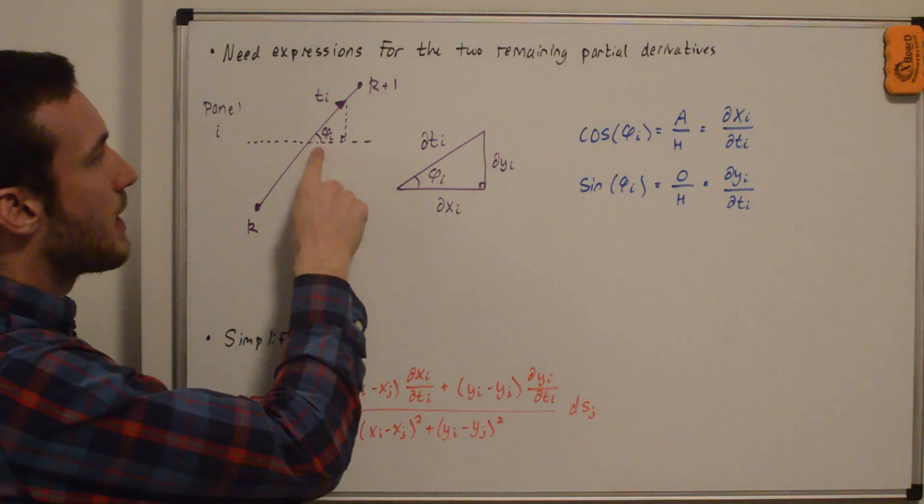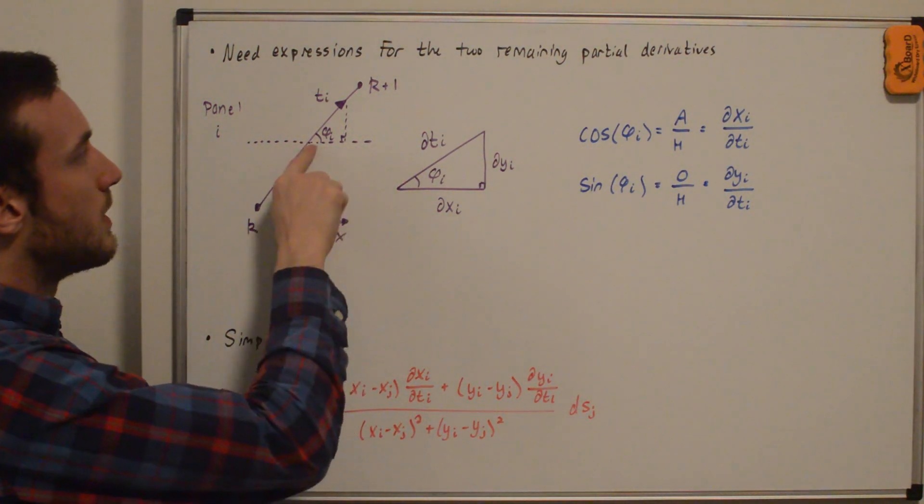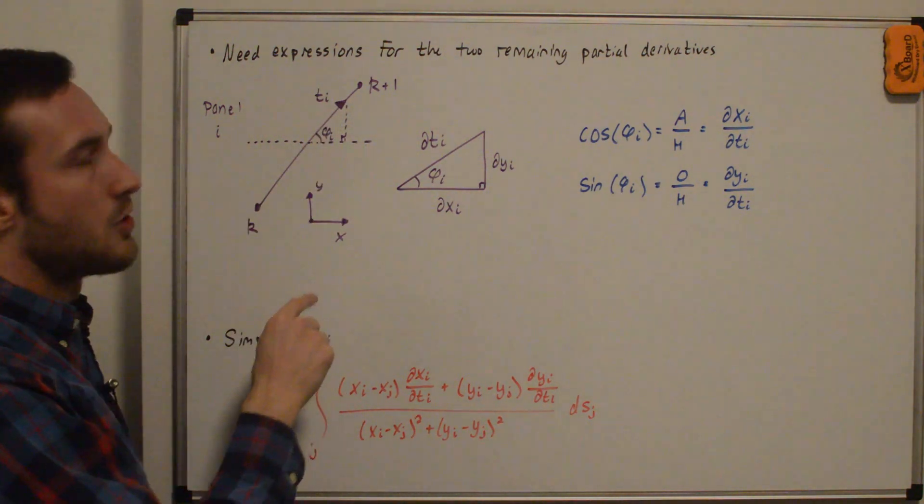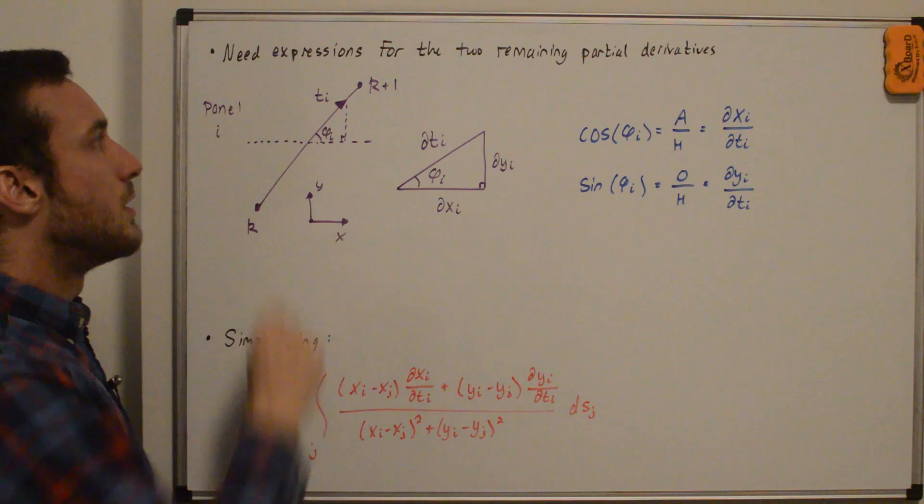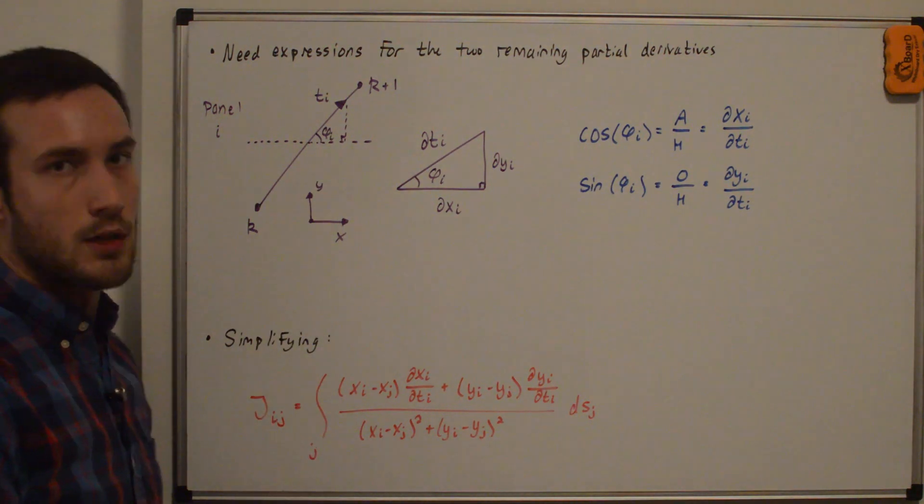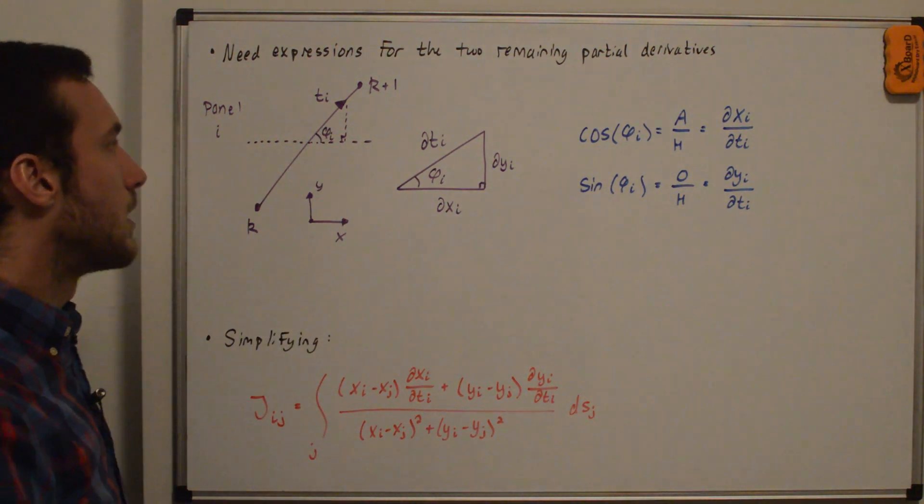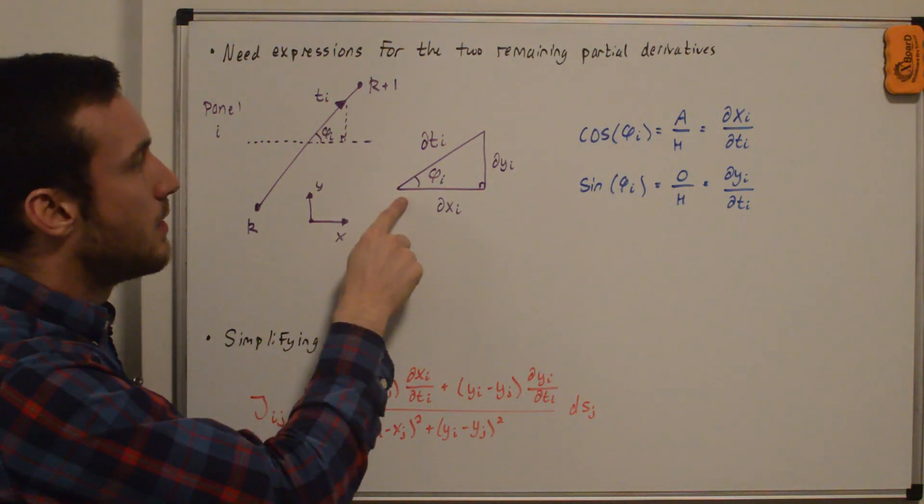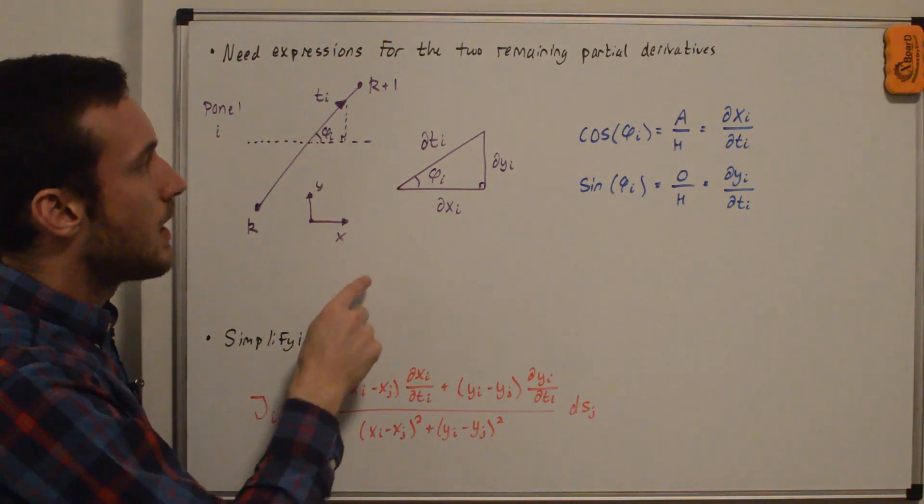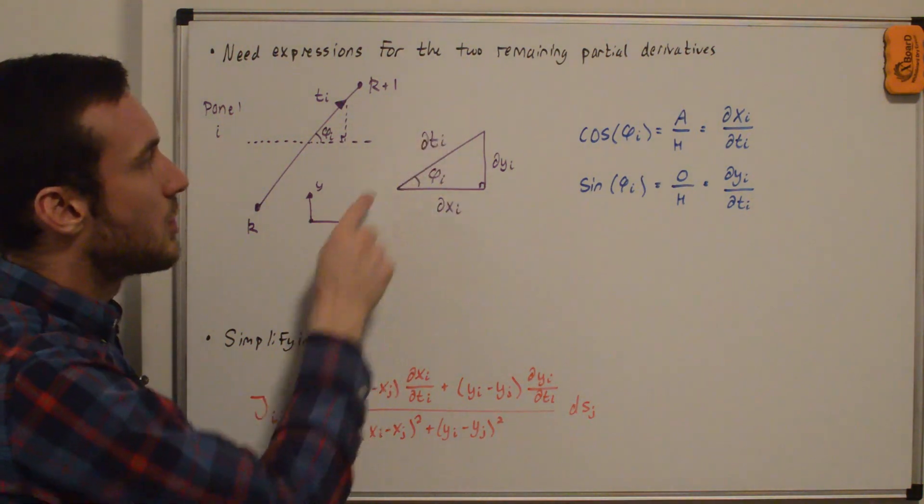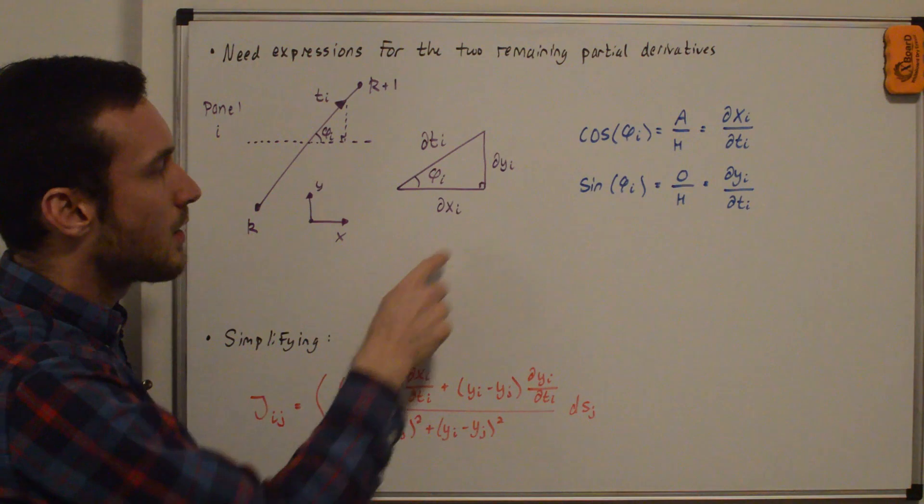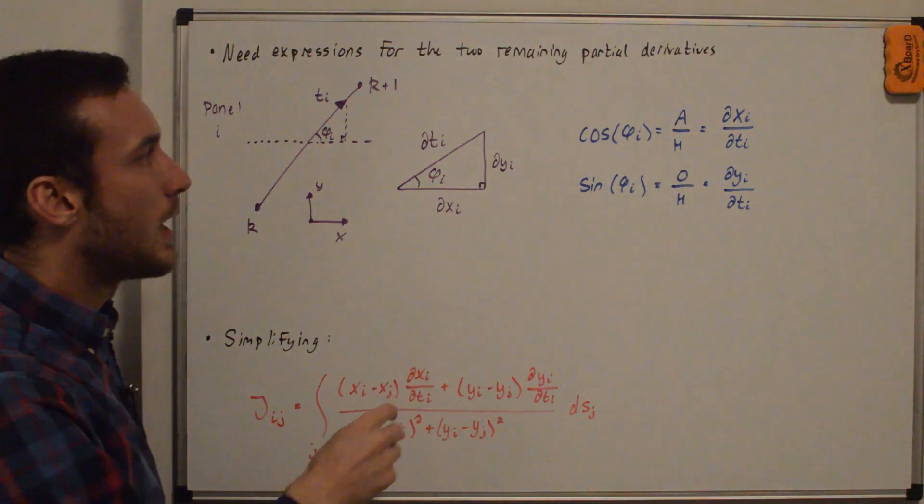And then the angle that the positive x-axis makes with the tangential vector, that's this arrow right here, ti. So the tangential vector on the i-th panel, that angle is phi i. You can go back to my panel method geometry video if you're confused about that. And so this makes a triangle here. And so that's blown up right here. This angle still is phi i. This is a differential move in the tangential direction, dti. Differential move in the x-direction, dxi. Differential move in the y-direction, dyi.